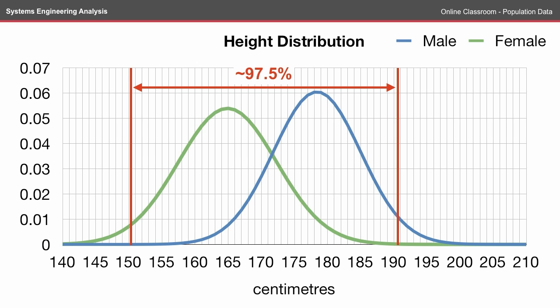If we take two standard deviations of both of the populations we will capture about 97.5% of the population. So if the car is designed with these anthropometric characteristics in mind, the car will suit the vast majority of the population.